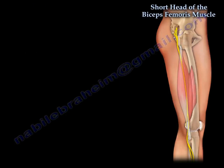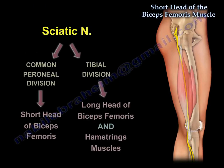Looking at the sciatic nerve, the peroneal division gives innervation to the short head of the biceps, while the tibial division innervates the long head of the biceps and the other hamstring muscles.